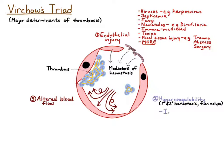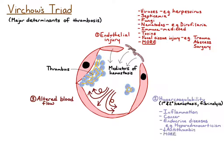Causes of hypercoagulability are also quite numerous. Intense inflammation can actually initiate the coagulation cascade. Cancer can also produce procoagulant factors which initiate the coagulation cascade. Animals with hyperadrenocorticism, or Cushing's disease, also have a hypercoagulable state, though the mechanism behind this is poorly understood.